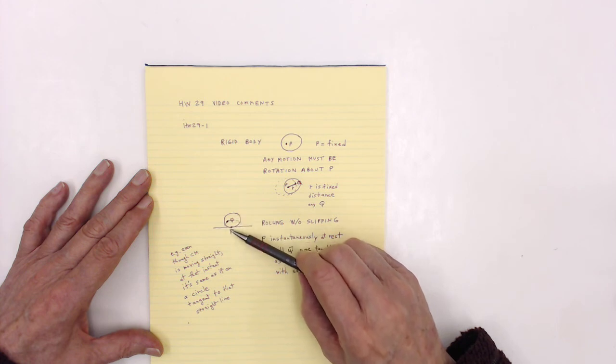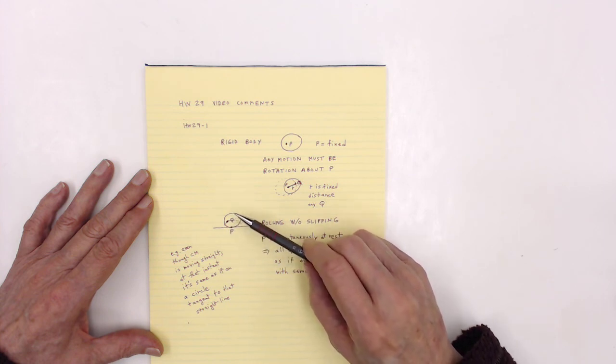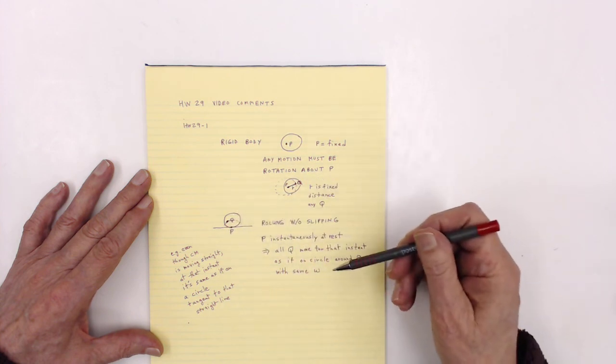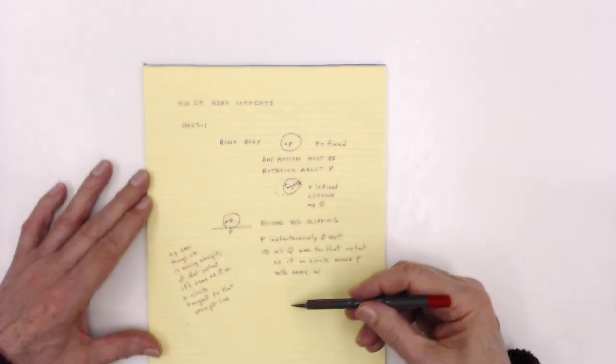And, of course, then any point on here, including the top, will have a velocity dependent upon how far away they are by V equals omega R. So, I hope that helps.